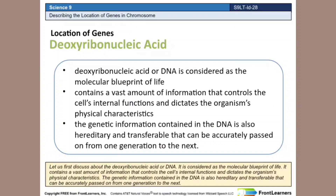Let us first discuss about the deoxyribonucleic acid or DNA. It is considered as the molecular blueprint of life. It contains a vast amount of information that controls the cell's internal functions and dictates the organism's physical characteristics. The genetic information contained in the DNA is also hereditary and transferable, and can be accurately passed on from one generation to the next.